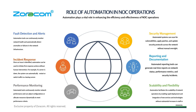In security management, automated systems can scan for vulnerabilities, apply patches, and update security protocols across the network without manual oversight. Automating your NOC guarantees top-notch security management. In reporting and documentation, automation helps you generate reports and documentation of incidents or events in real time — whether you need them in seconds, minutes, hours, or daily — covering network status, performance metrics, and security incidents.